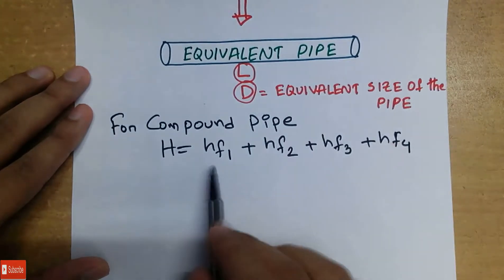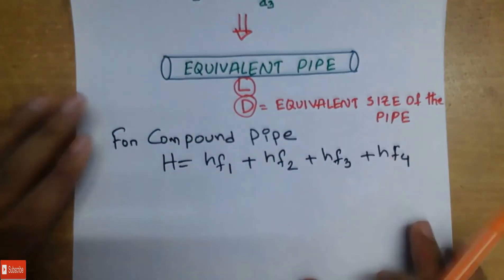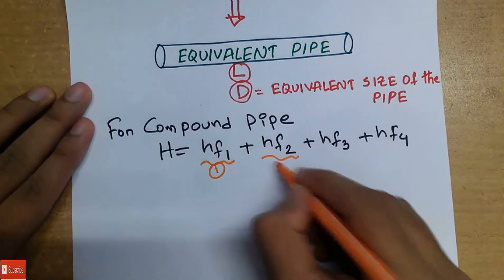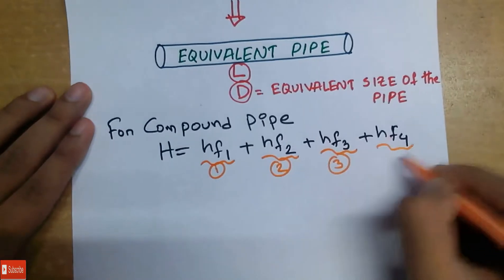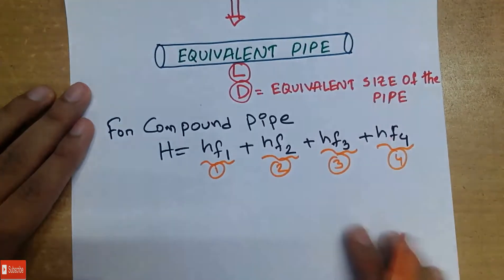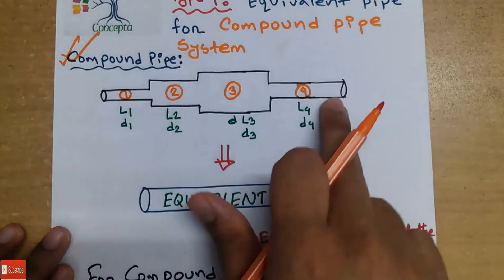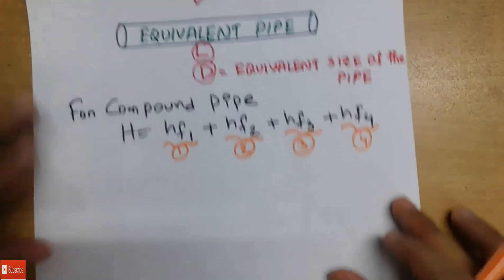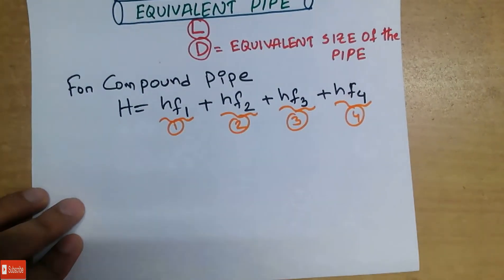So, this is HF1. HF1 is head loss, HF2 is head loss, HF3 is head loss, HF4 is head loss. So we have a total head loss.